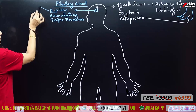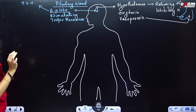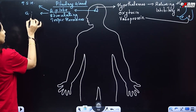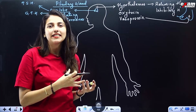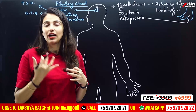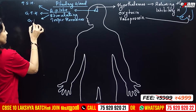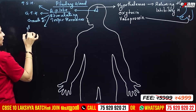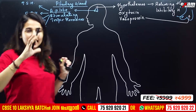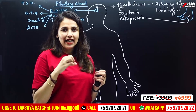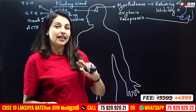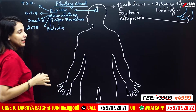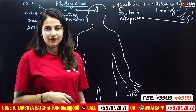The anterior lobe of the pituitary secretes several hormones: Thyroid Stimulating Hormone (TSH), Gonadotropic Hormone (which stimulates the gonads — testes in males and ovaries in females), Growth Hormone, Adrenocorticotropic Hormone (which stimulates the adrenal cortex), and Prolactin, which is the hormone responsible for milk production.